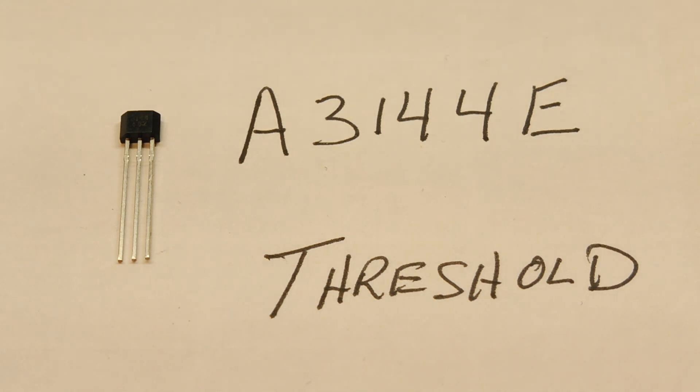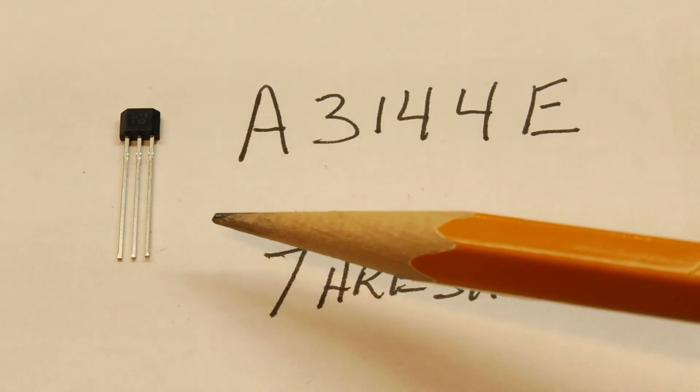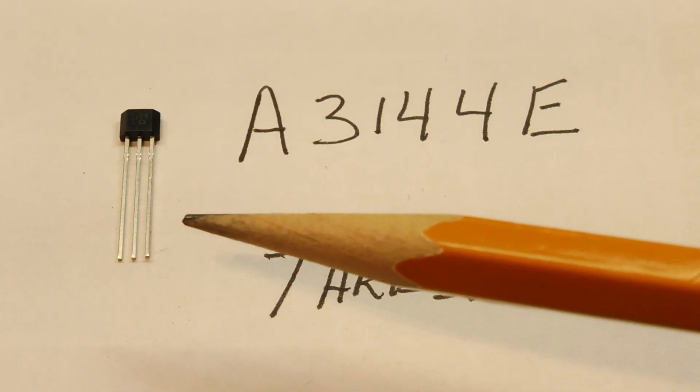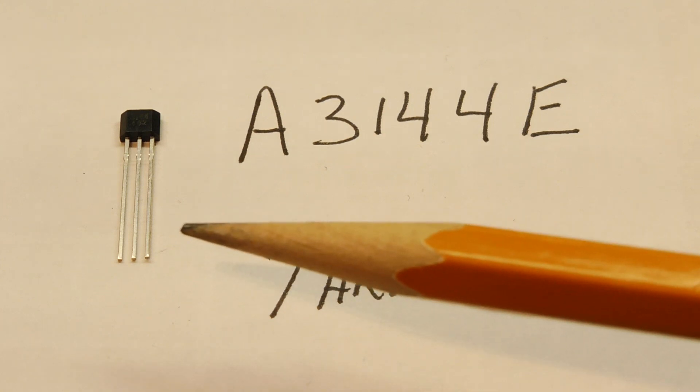Now this particular Hall effect switch here, the A3144E, will react to a Gauss level of 50 to 350 Gauss.